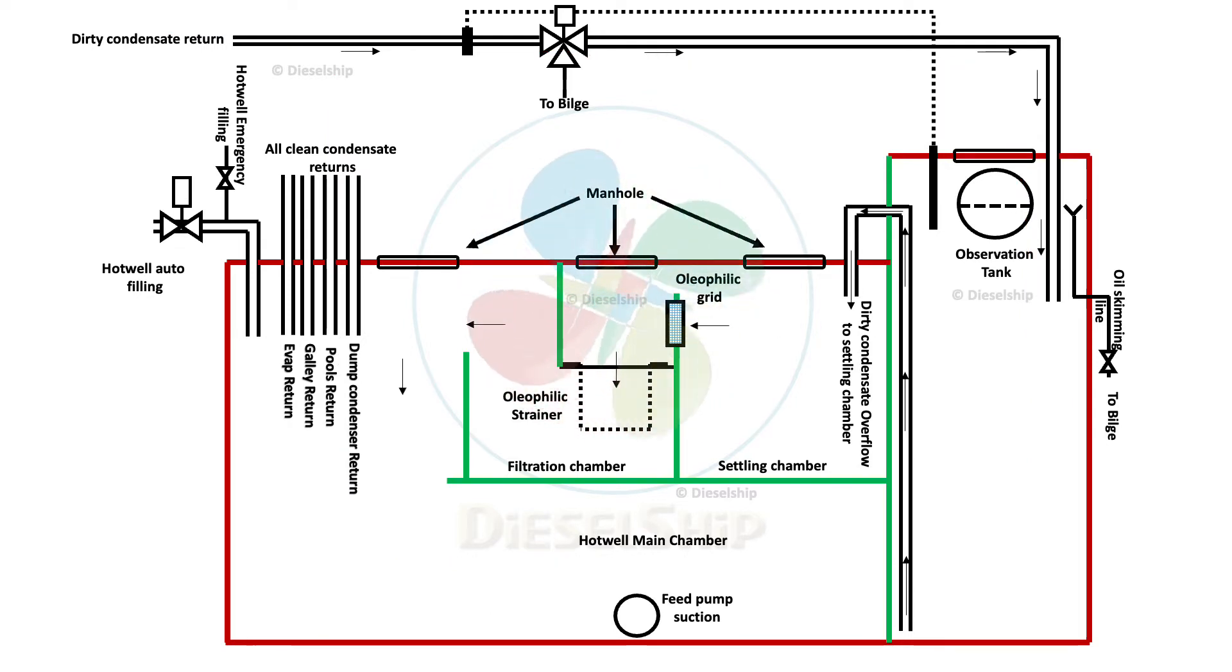All dirty condensates from different uses come and manifold into one line, the dirty condensate main. This line is installed with an oil sensor, which is of a capacitance type. If there is any oil present in this manifold, this oil sensor triggers the three-way valve to open to the bilge instead of going to the observation tank or the hot well.